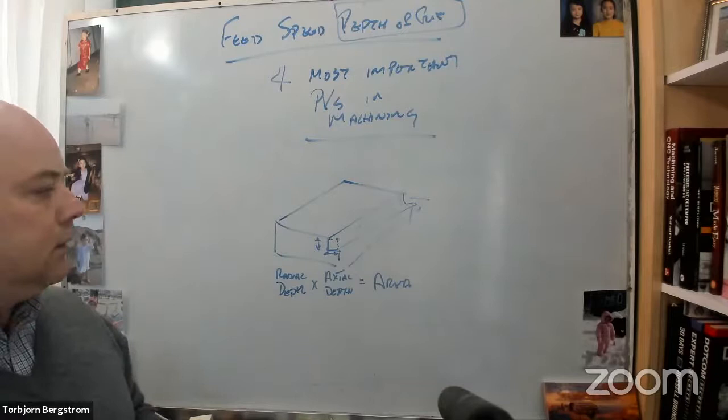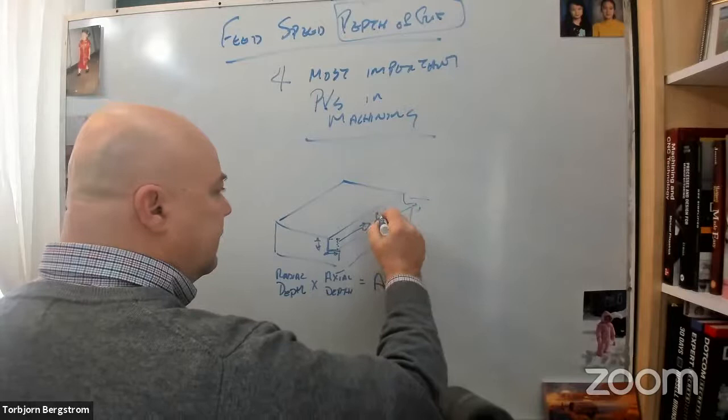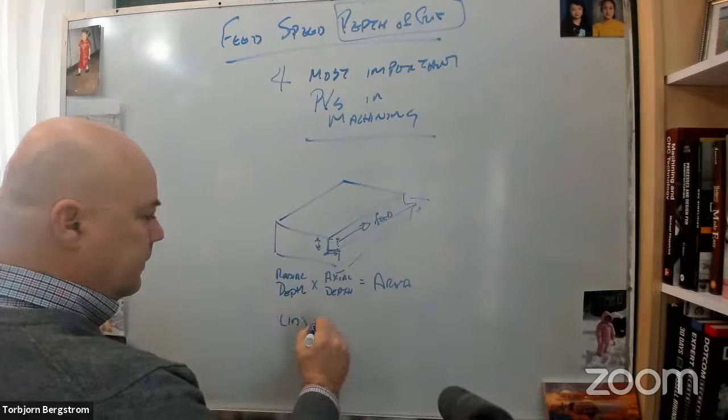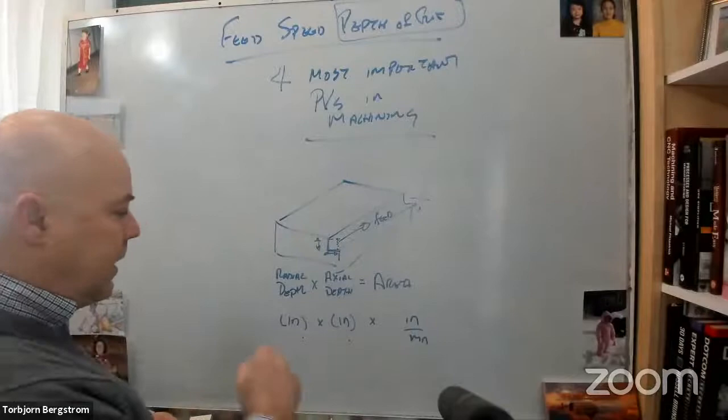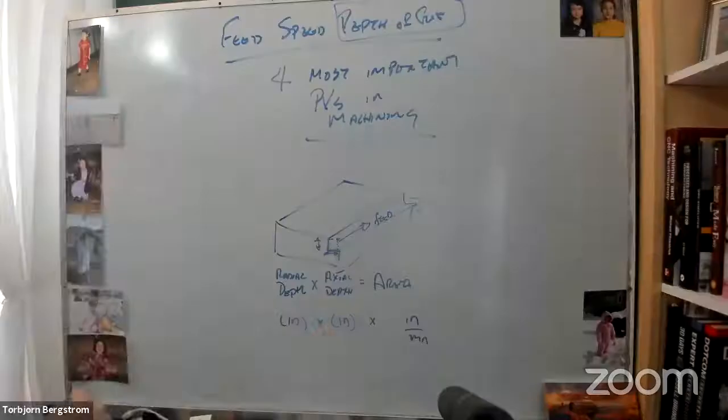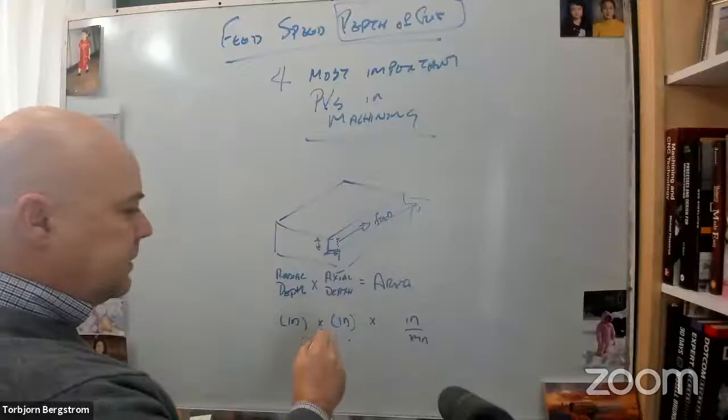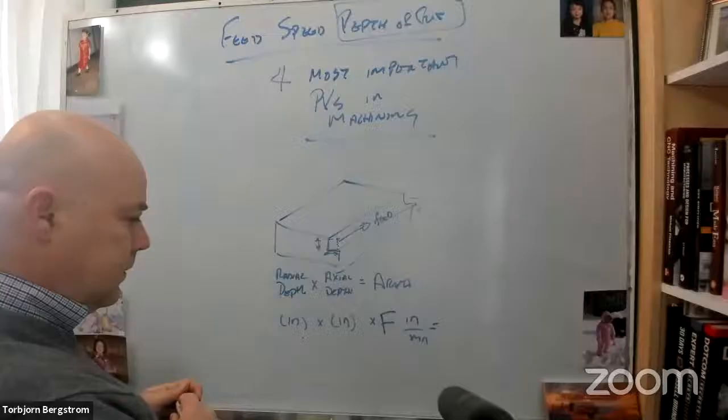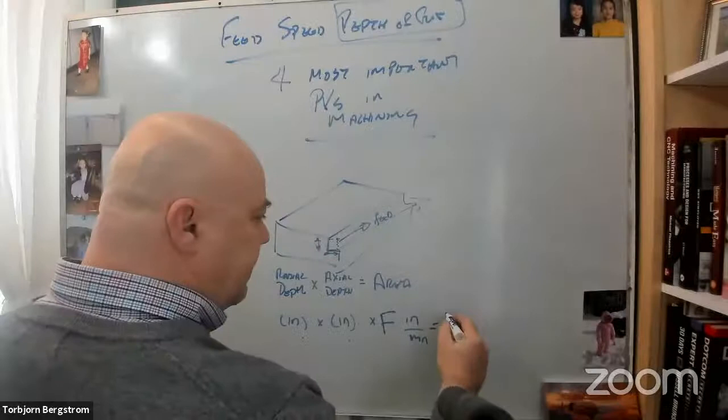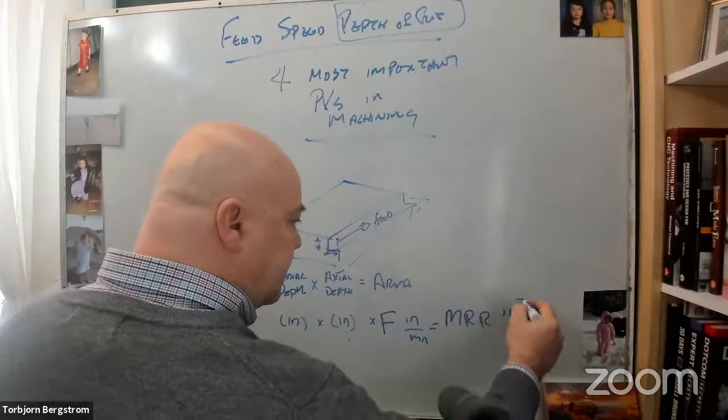So radial depth times axial depth equals an area. If we have a feed rate that we multiply that by, what units should we use? I'm going to use inches per minute. Because these two have inches. So I get inches times inches times inches per minute. What does that equal? Cubic inches per minute. It equals the material removal rate in inches cubed per minute. Did I mention the material removal rate yesterday in lecture? Yes.